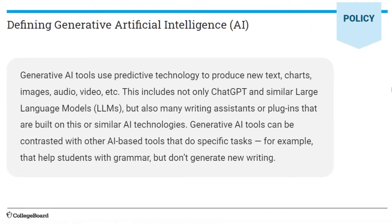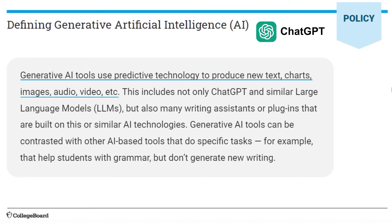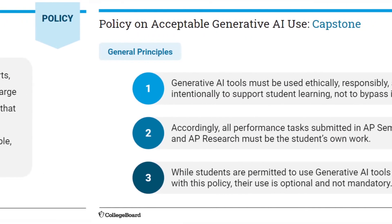According to the College Board, generative AI tools use predictive technology to produce new text, charts, images, audio, video, etc. The most well-known example of generative AI would probably be ChatGPT, which we will be using later when we look at the three practical strategies.